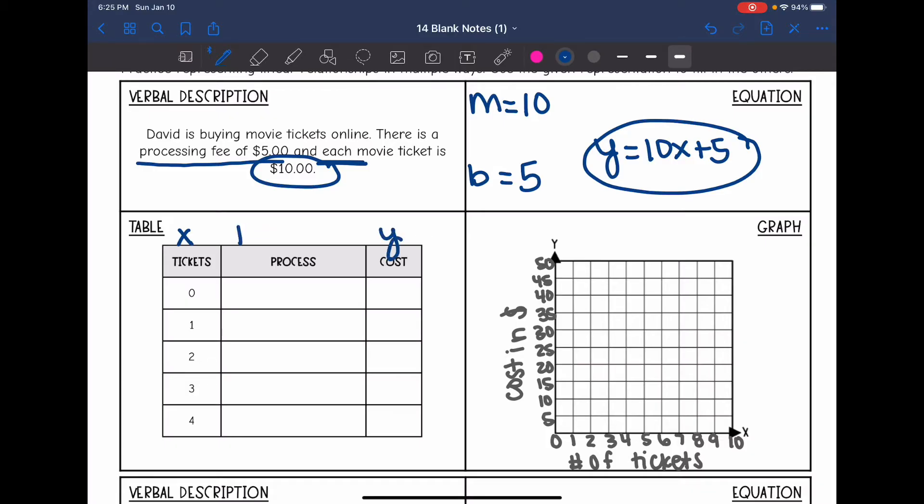Our process is to plug in the x values to 10x plus 5 to find y. On this first one, I want to know how much it costs for 0 tickets. So instead of x, I will put 0. And 10 times 0 plus 5 is 5. Next one, let's find the cost for 1 ticket by replacing x with 1. And 10 times 1 plus 5 is 15.